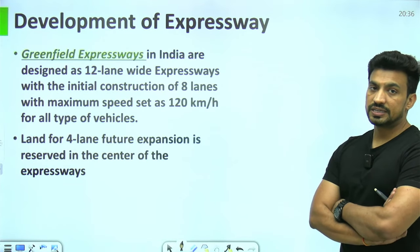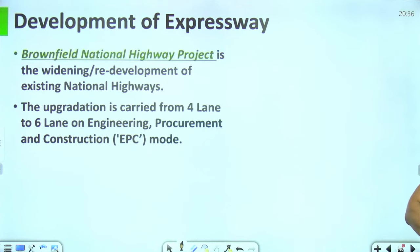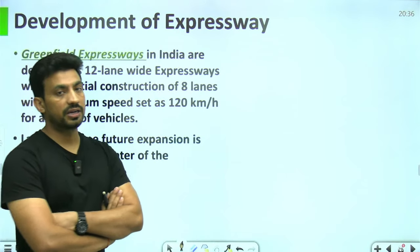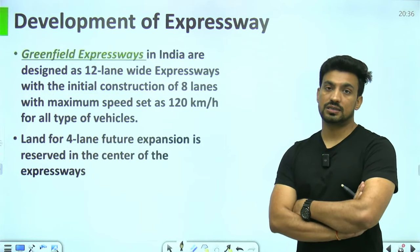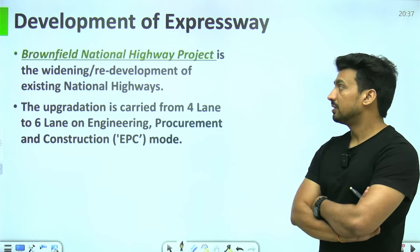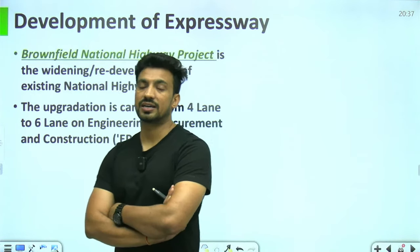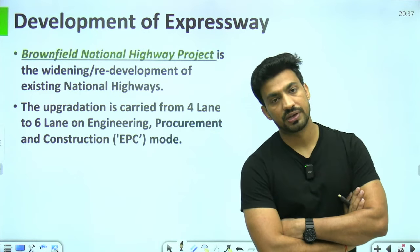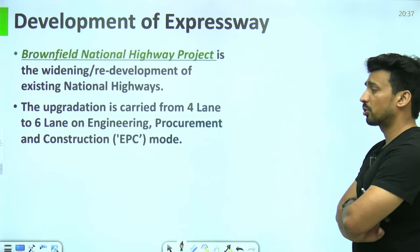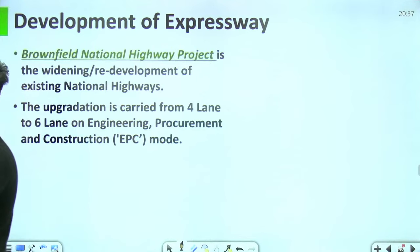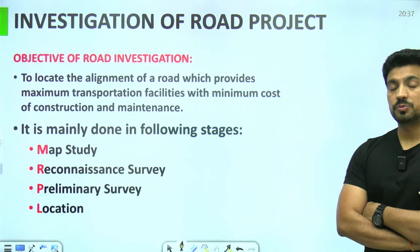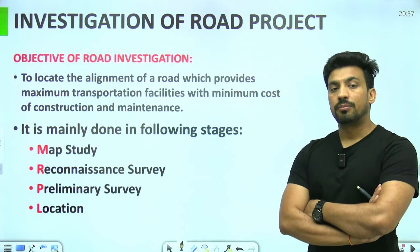Green field expressway में 12 lanes तक की width और 120 km/h तक की speed target है। Brown field national highway project में existing national highways की width या lanes बढ़ाई जाती हैं — 4 lane highways को 6 lane पर upgrade करना। Investigation of road projects के stages MRPL से याद रखें: Map study, Reconnaissance survey, Preliminary survey, Location survey।